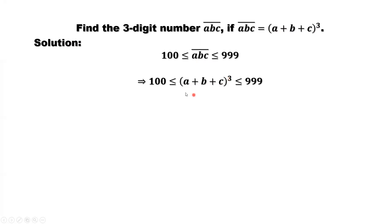Replace ABC by A plus B plus C to the power 3. We find the left-hand side limit and the right-hand side limit. So here we can take the third root for all three parts at the same time. So we can find the smallest number here should be 5, the largest number can be 9. This means A plus B plus C is between 5 and 9.